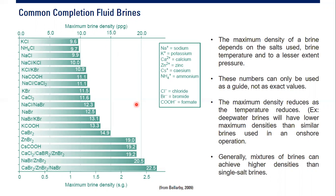You can see we have potassium chloride (KCl), ammonium chloride (NH4Cl), sodium chloride (NaCl), a combination of sodium chloride and KCl, and a combination of KCl and KBr, and so on. At the top of the chart we have maximum brine density in pounds per gallon.